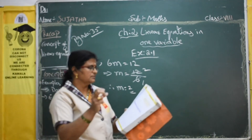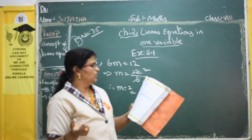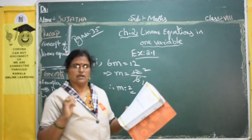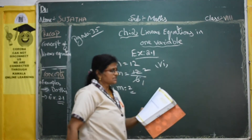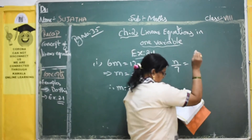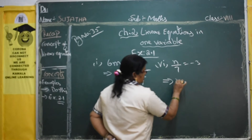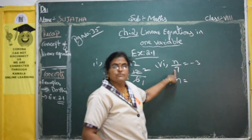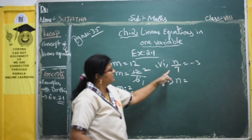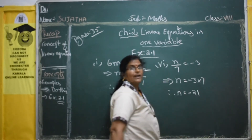The easy sums I will give as homework. For the sixth one: n divided by 7 equals minus 3. Here 7 is in division form. Division moving to the other side becomes multiplication, so n equals minus 3 multiplied by 7, therefore n equals minus 21.